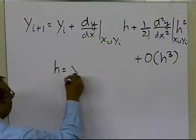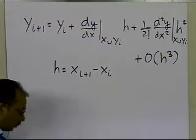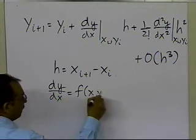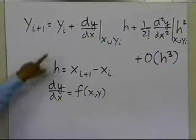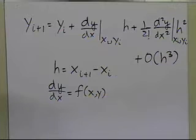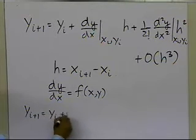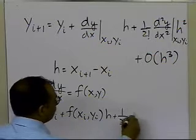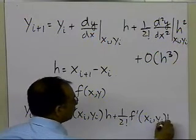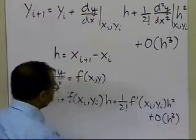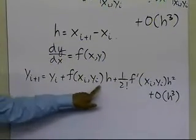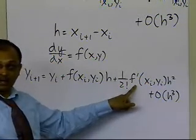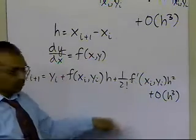We know that h is the difference between the point where we want to go and the point where we are. Since the differential equation is dy/dx = f, we substitute back into the Taylor series expression. We get y_{i+1} = y_i + f(x_i, y_i)·h + (1/2)·f'(x_i, y_i)·h² + O(h³). Taking the second derivative of y gives the first derivative of f, which is why only f prime appears in the expression.